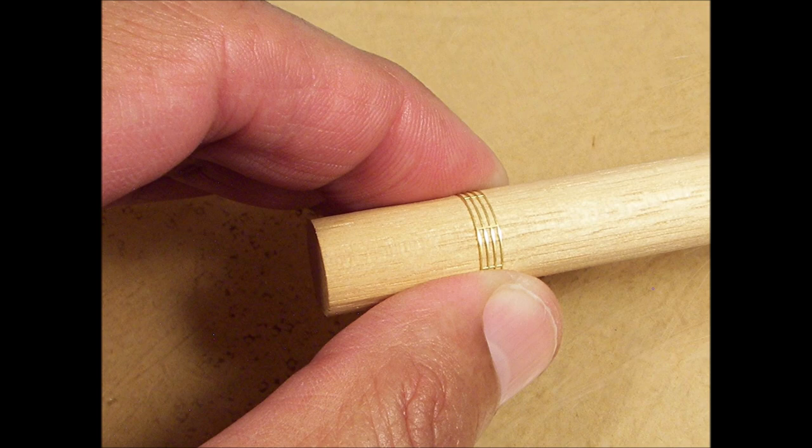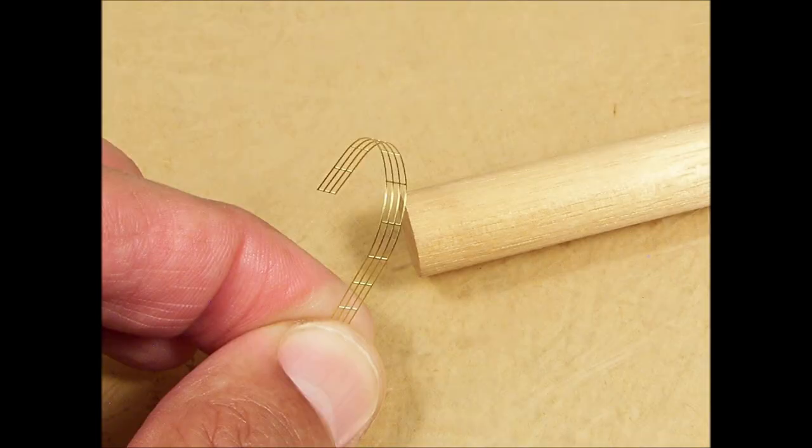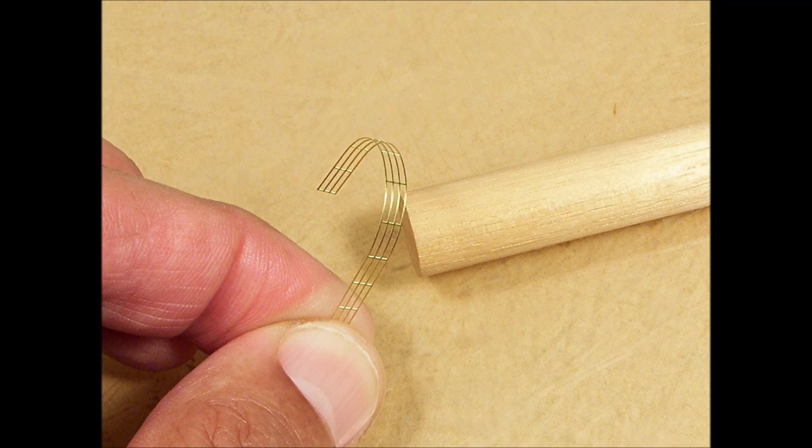Use a diameter slightly smaller than the one you need as the curve you form in the railings will spring back some, resulting in a slightly bigger radius. Careful shaping of the railings around a wood dowel will produce a nice curve with no distortions.